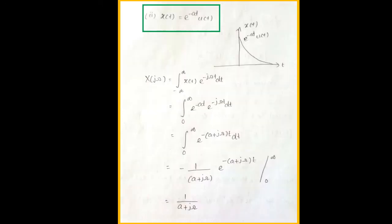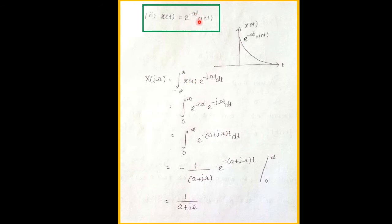Next problem: x(t) = e^(−at)u(t). Here e^(−at) is an exponential function. Applying the Fourier transform: X(jω) = integral of e^(−at)u(t) e^(−jωt) dt. Since u(t) equals 1 for t ≥ 0 and 0 for t < 0, the limit changes to 0 to infinity: X(jω) = integral from 0 to ∞ of e^(−at) e^(−jωt) dt. Whenever u(t) appears, we replace the integration limits with 0 to ∞.